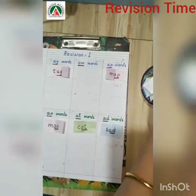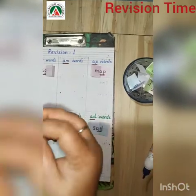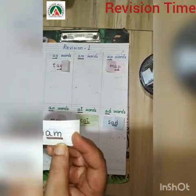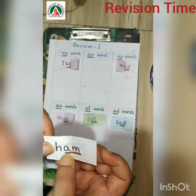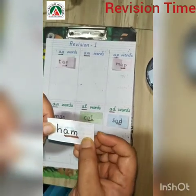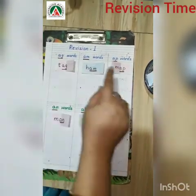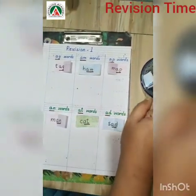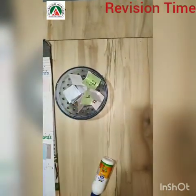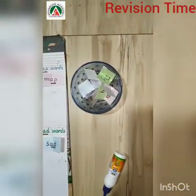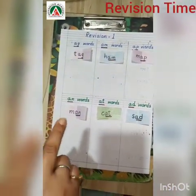Now next word is — am word. H-A-M, ham. So you have to paste it in 'am'. So like this, you have to take out from the bowl all the chits and you have to place them one by one in the ending words.